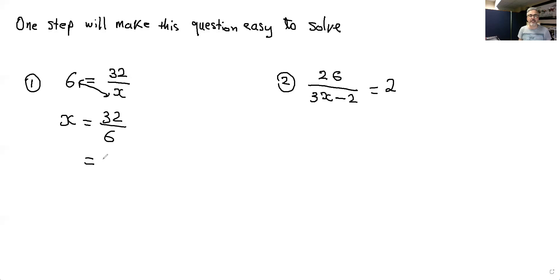So the 6 went where the x is and the x went where the 6 is. So 32 divided by 6, all you could do is just reduce here. So 2 goes into 32 16 times and goes into 6 3 times and that's what x equals.